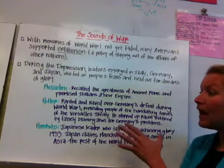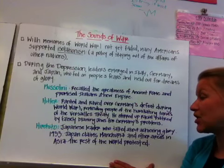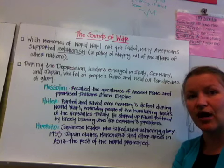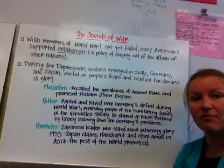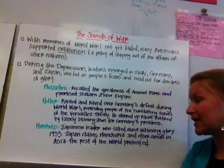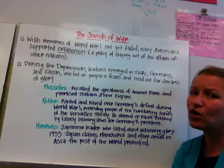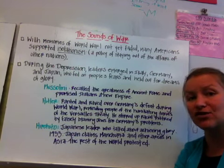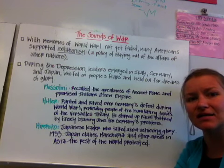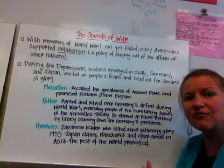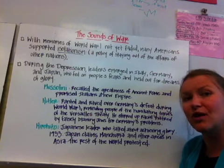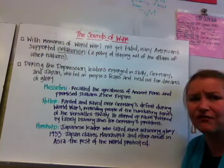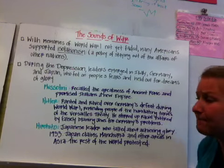Hirohito was the Japanese leader who talked about Japan achieving great power. His first step was to invade Manchuria in 1931. The world watched this happen, and while the United States was upset, the idea of isolationism prevented us from becoming too involved — especially in Asia, which seemed very far away at the time.